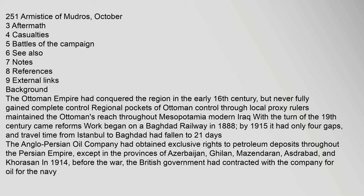Background: The Ottoman Empire had conquered the region in the early 16th century but never fully gained complete control. Regional pockets of Ottoman control through local proxy rulers maintained the Ottomans' reach throughout Mesopotamia — modern Iraq. Work began on a Baghdad railway in 1888; by 1915 it had only four gaps, and travel time from Istanbul to Baghdad had fallen to 21 days. The Anglo-Persian Oil Company had obtained exclusive rights to petroleum deposits throughout the Persian Empire, except in the provinces of Azerbaijan, Gilan, Mazendaran, Astrabad, and Khorasan in 1914. Before the war, the British government had contracted with the Company for oil for the Navy.